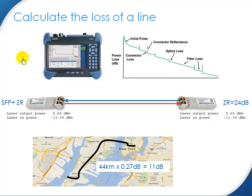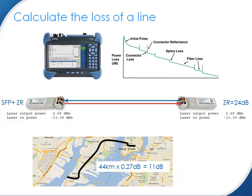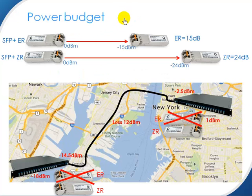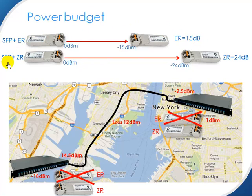If you want to calculate what your loss of the line is, you can use different techniques for that. You can use an OTDR, you can use the DOM feature of your optic, or you can just calculate how many kilometers your dark fiber is and multiply that by 0.27, just to be on the safe side. It's important to have the right optics and to calculate what your power budget is. For example, an SFP Plus ER has a power budget of 15 dB, and ZR has a minimum power budget of 24 dB.